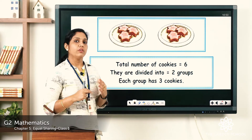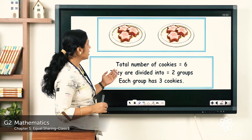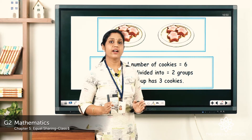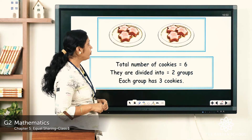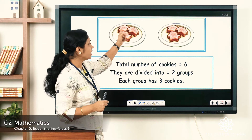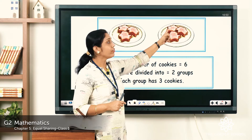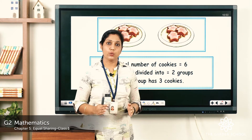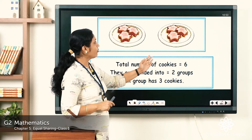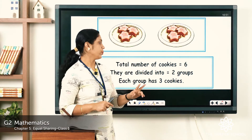Now look at this picture with some cookies. There are two groups. Counting: one, two, three, four, five, six — six cookies in total, grouped into two. In this plate we have three cookies, and in this plate also we have three. So they are equally distributed. The total number of cookies is six, divided into two groups, and each group has three cookies.